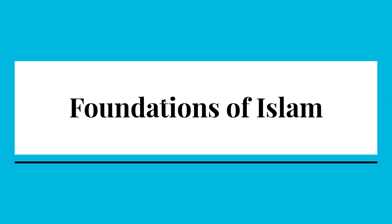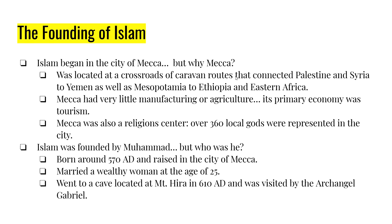The second part of this video has to do with the foundation of Islam. Islam was founded in the Middle East, which is technically part of Africa. Islam starts in the city of Mecca — a strategically located crossroads of caravan routes going from Palestine to Syria, Syria to Yemen, and connecting to Ethiopia. Mecca doesn't have a lot of manufacturing or agriculture. It's a center, a rest stop, a place to get a bite to eat and a good night's sleep before continuing your journey. Because so many people went through Mecca, it was a pilgrimage center with over 360 gods represented within the city.